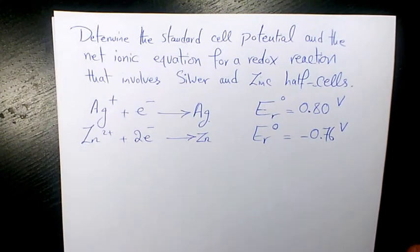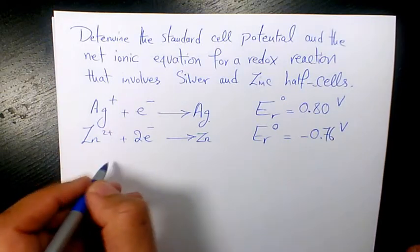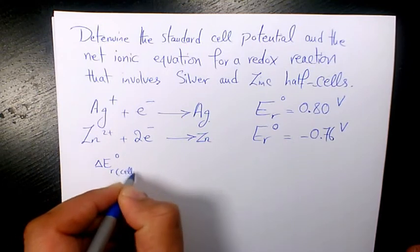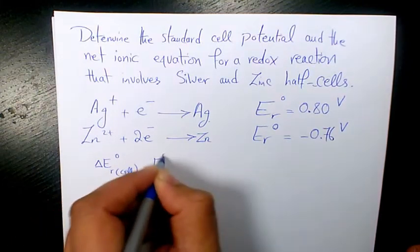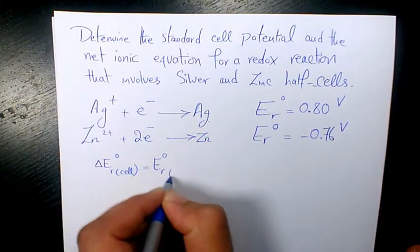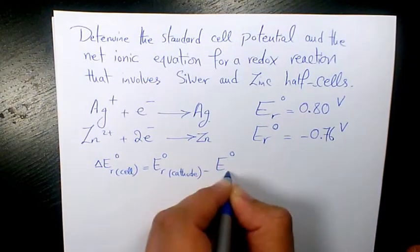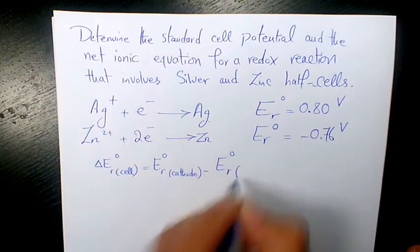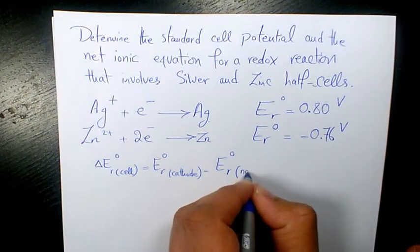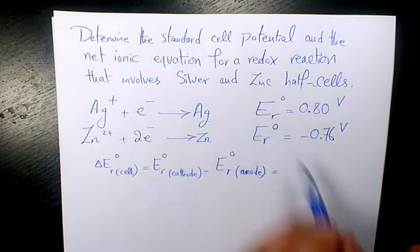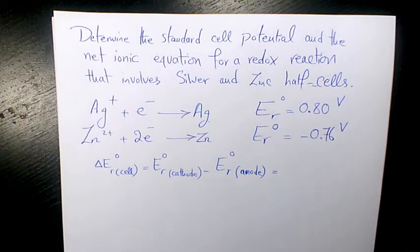So if I want to find out the standard cell potential, that's going to be ΔE° cell equals to standard reduction potential for cathode minus standard reduction potential for anode. So now we need to figure out which one is cathode, which one is anode.